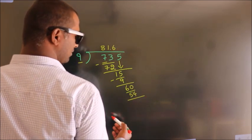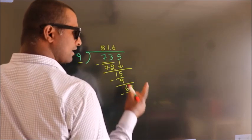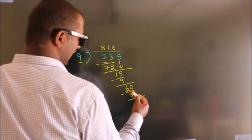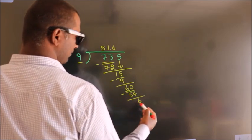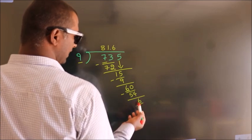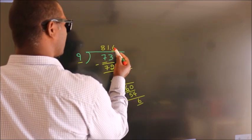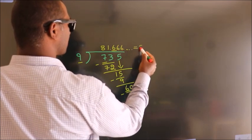Now, we subtract and get 6. Now, you observe we had 6 here, and we got 6 again. That means this number keeps on repeating. So, this is our quotient.